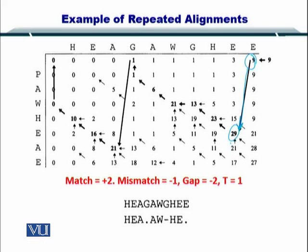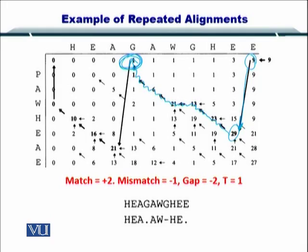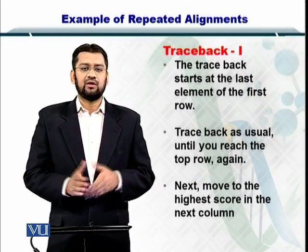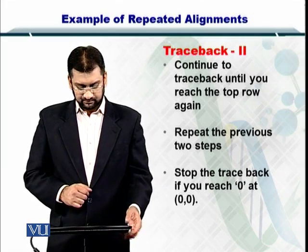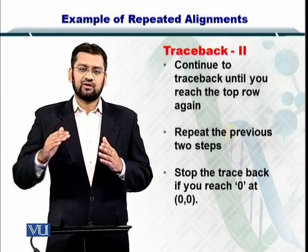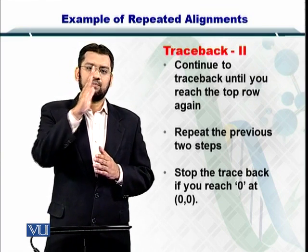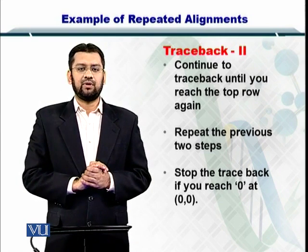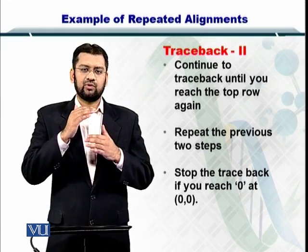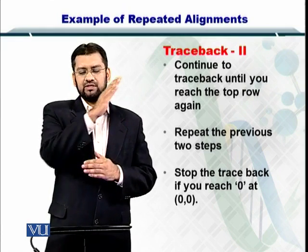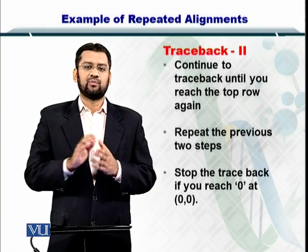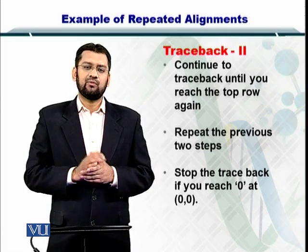This jump is what we're talking about, and then you move as the typical traceback does until you reach the first element in one of the preceding columns. We repeat these two steps: we reach the top row, then jump to the previous column by selecting the maximum score in that column. We repeat this process until we reach the (0,0) position of the alignment matrix.